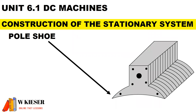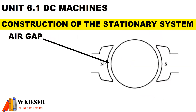The pole shoe — the main function of the pole shoe is to distribute magnetic flux over the air gap. The air gap is the gap between the stationary part and the rotating part. The air gap must be large enough to prevent friction but small enough to prevent energy loss.